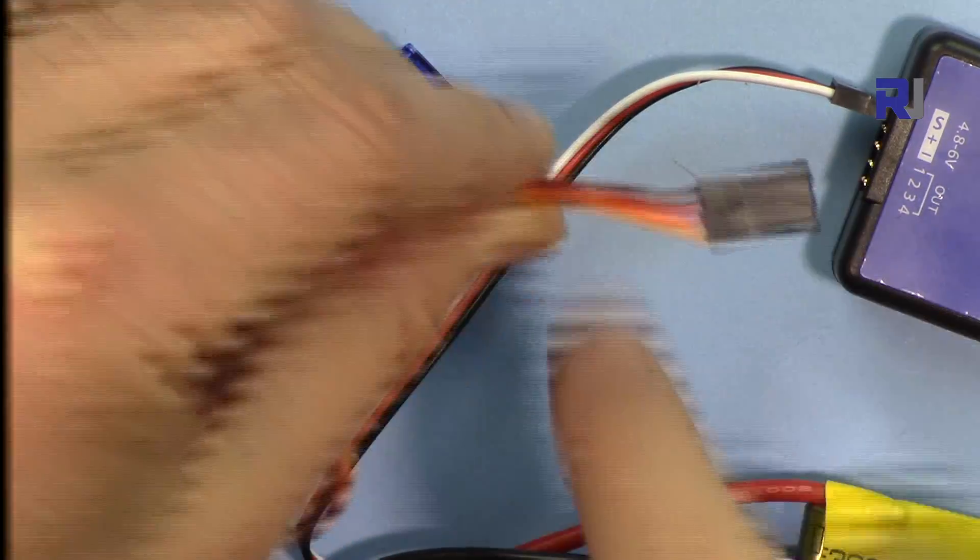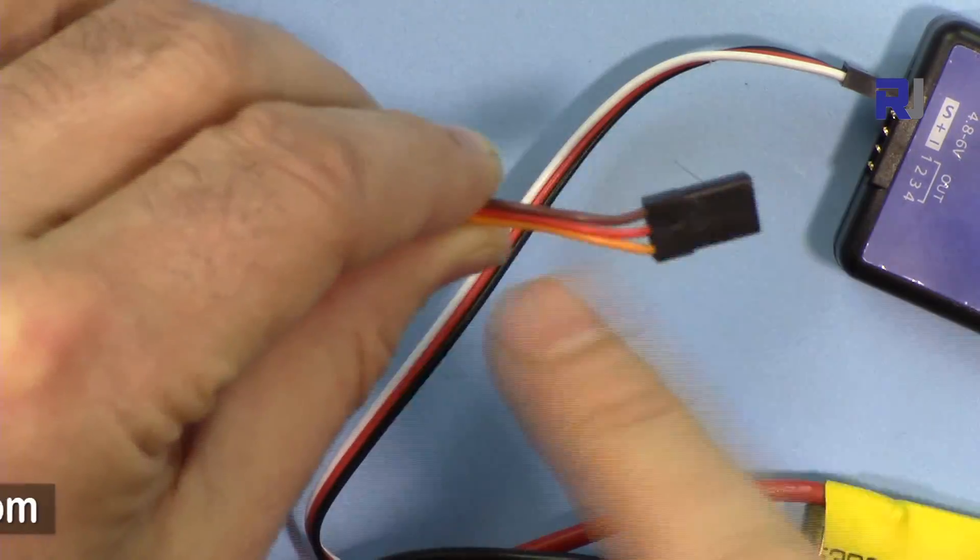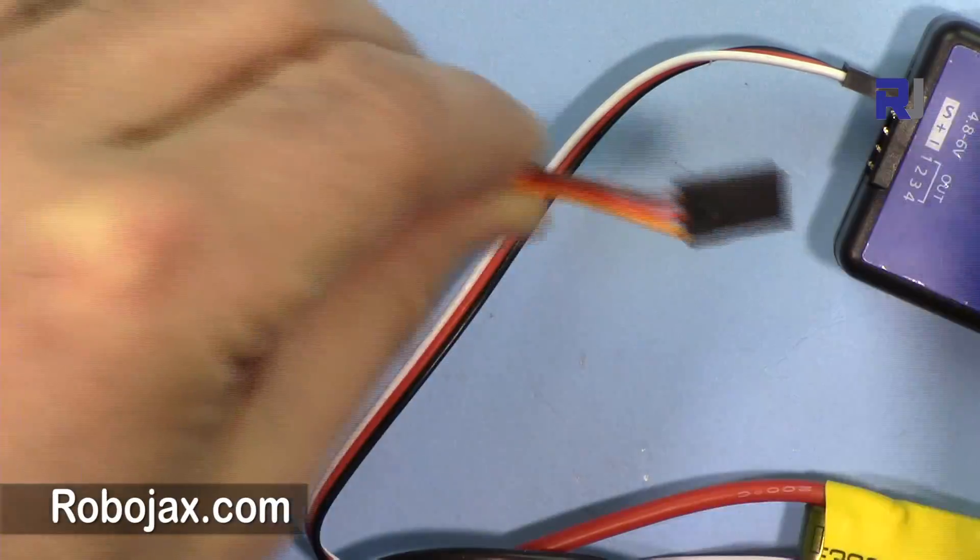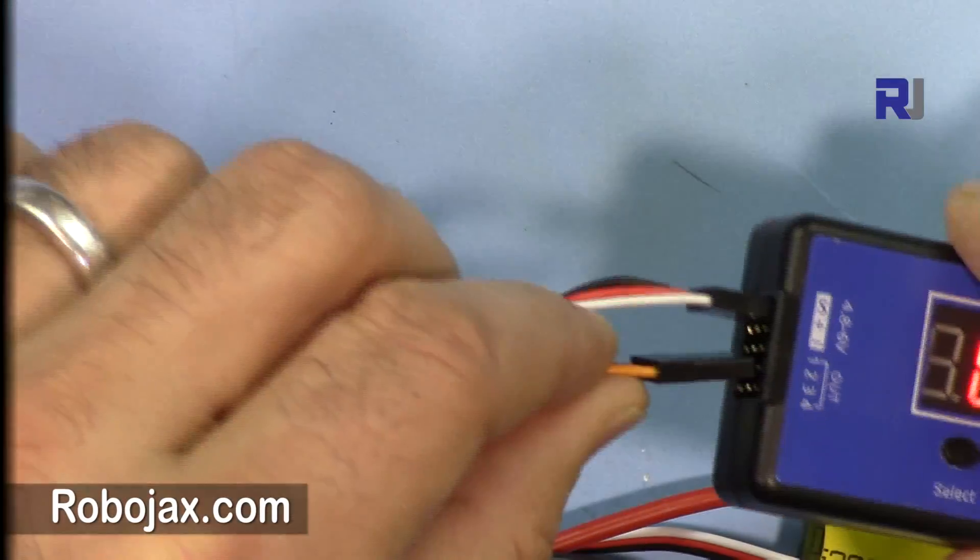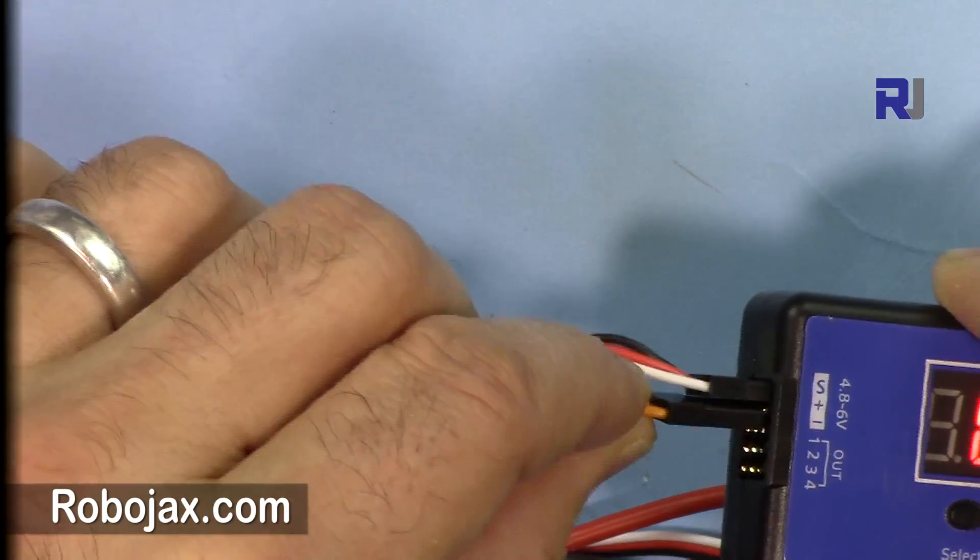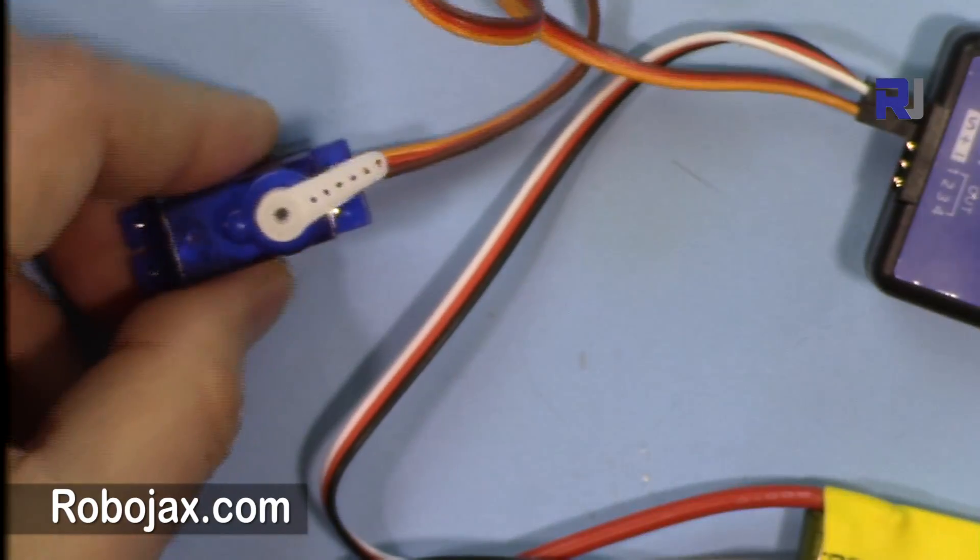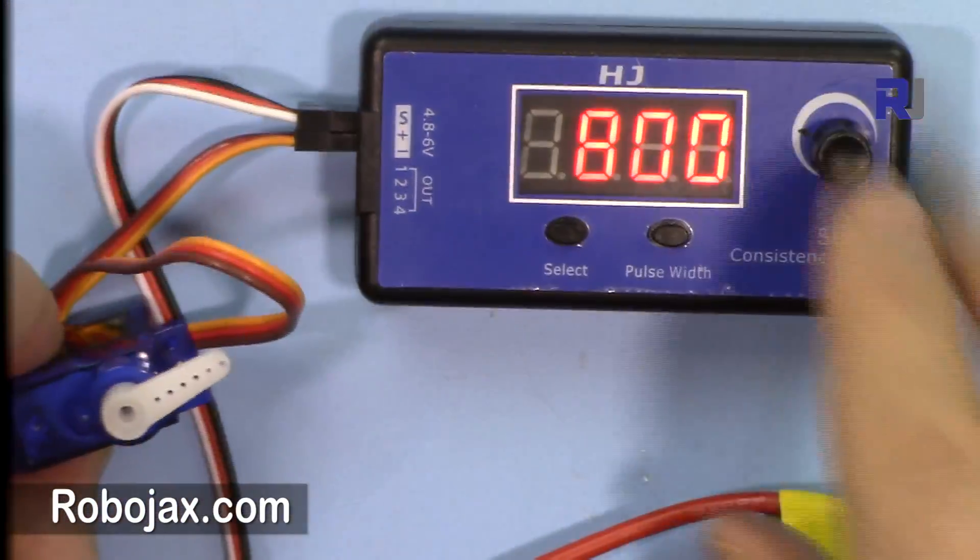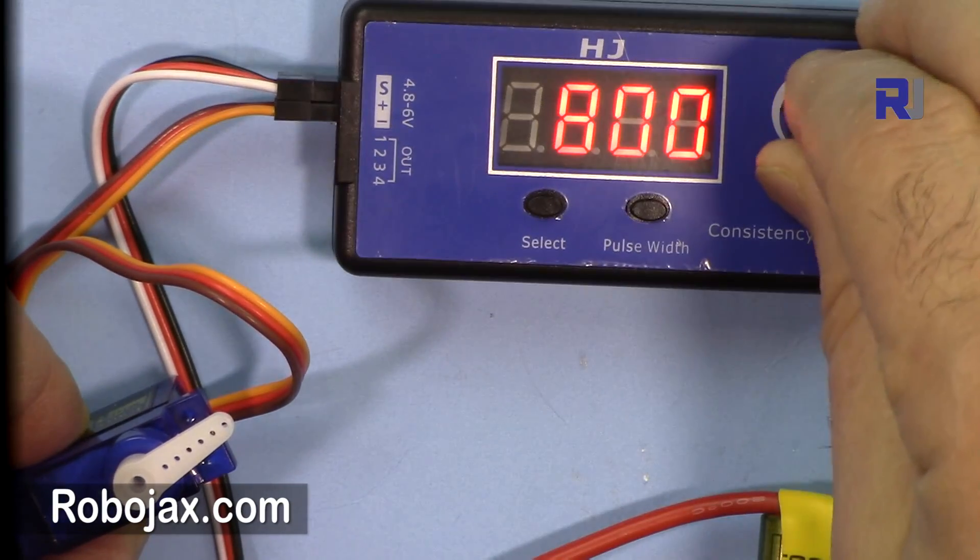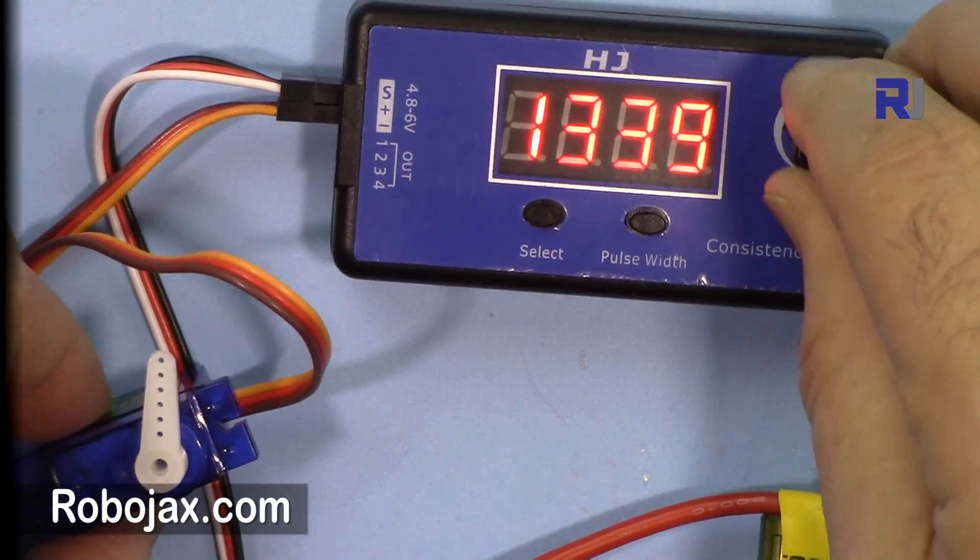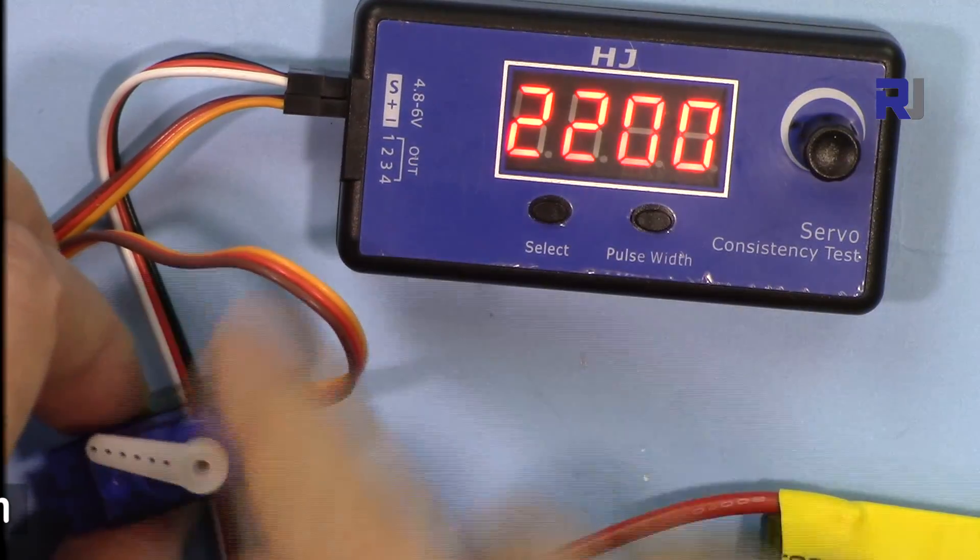You see here this color, because this is a servo not ESC. ESC with BEC will have power, but this doesn't have any power. So the black one or the darker color should be at the bottom. Let me put it at the last channel. Now that's the servo, so if I rotate it you can see that's the maximum of this motor, that servo.